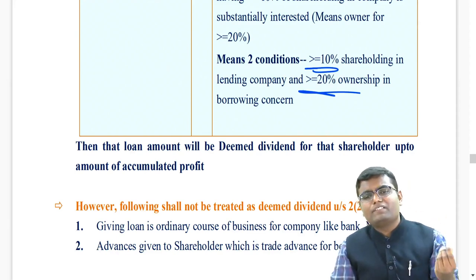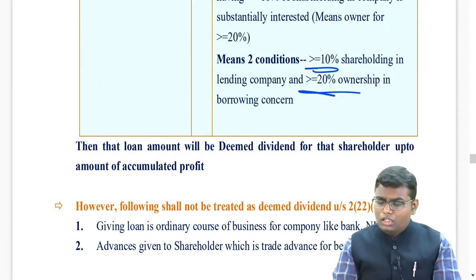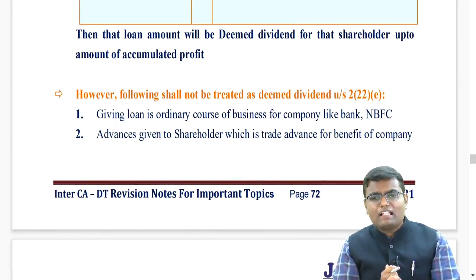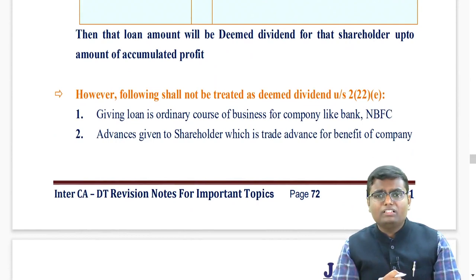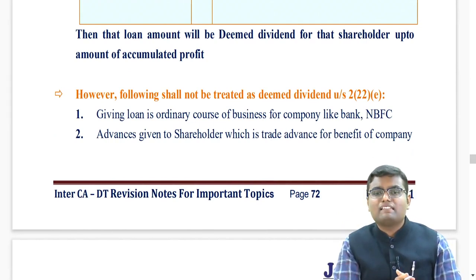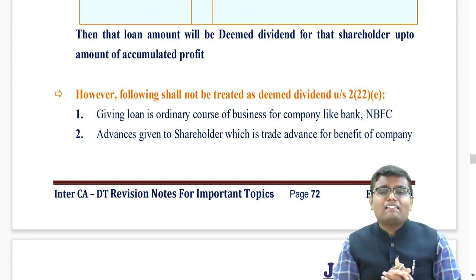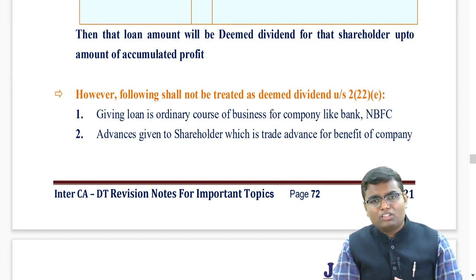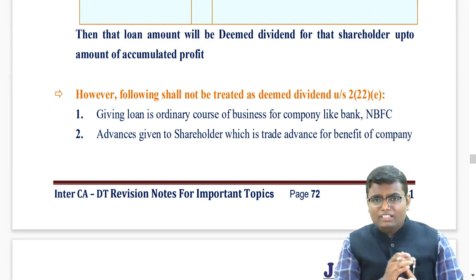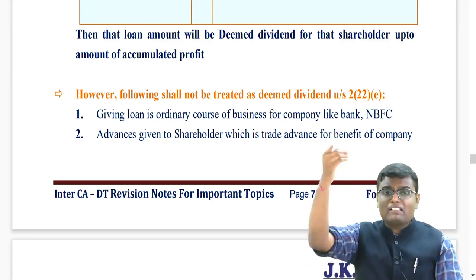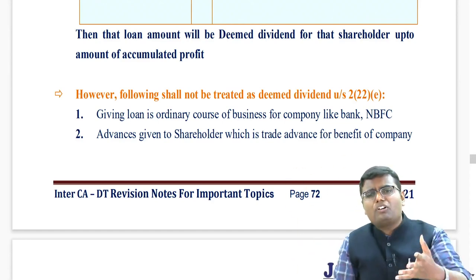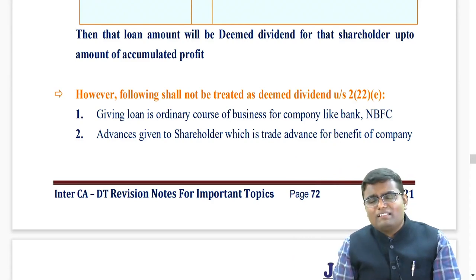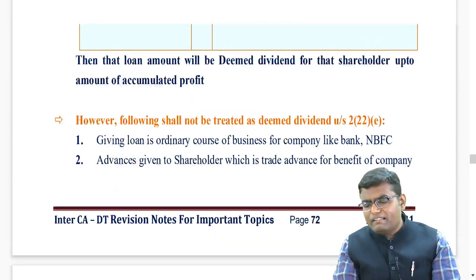Up to the amount of reserve and surplus it will be treated as deemed dividend. However, two kinds of loans or advances will never be called deemed dividend. Number one: if the lending company is in the business of giving loans - like a bank or NBFC - giving loans is in the ordinary course of business. Number two: advances given to the shareholder which are like a trade advance for the benefit of the company - if the company gives an advance to the shareholder for paying a certain amount to a third party on behalf of the company, it is a trade advance and won't be treated as deemed dividend.